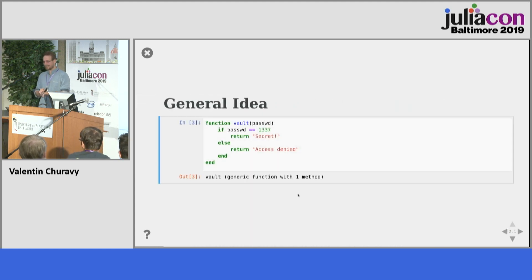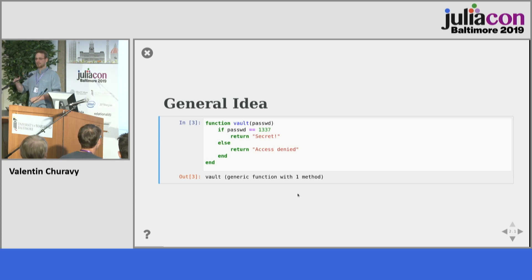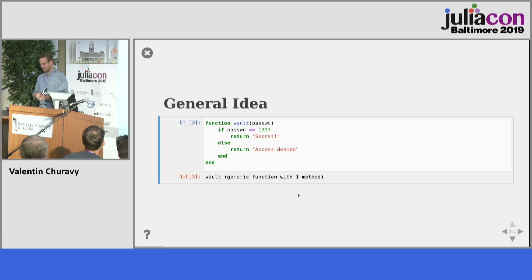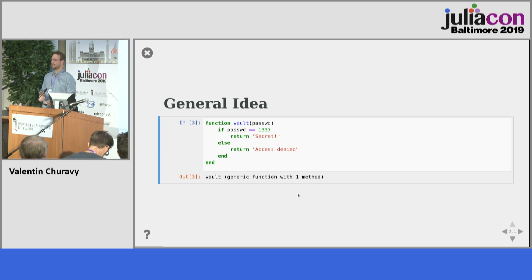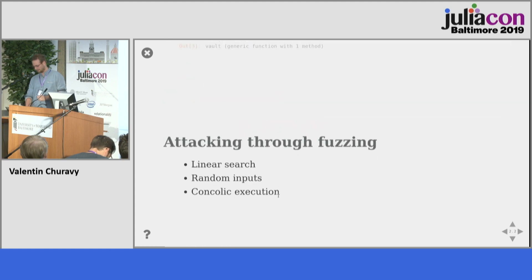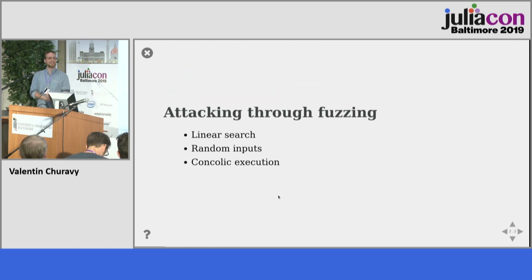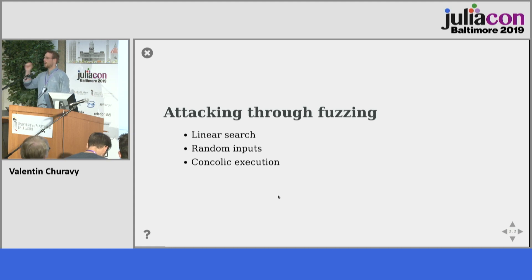The general idea: let's say we've been given a challenge — we want to crack a vault. The vault takes a password, checks it, and either reveals its secret or gives us an access denied string. We want to find the password with minimal effort. We could do a linear search, enumerate all int64s one after another, but that's kind of inefficient.